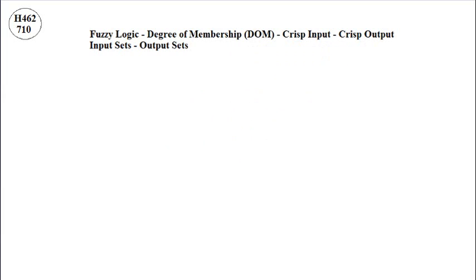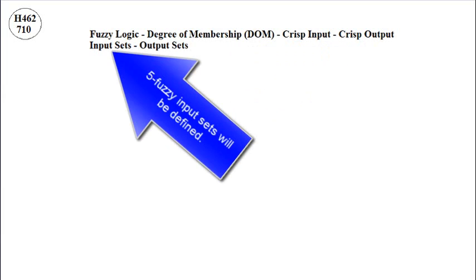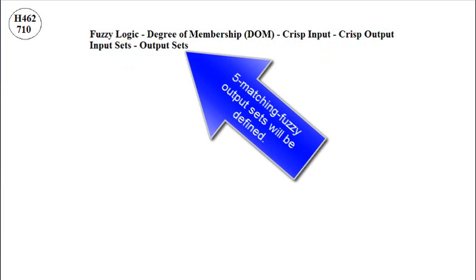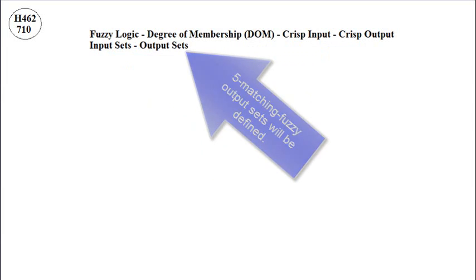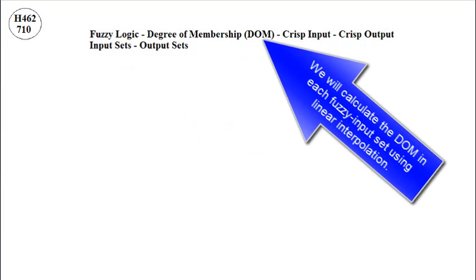Five fuzzy input sets will be defined, and five matching fuzzy output sets will be defined. We will calculate the degree of membership in each fuzzy input set using linear interpolation.